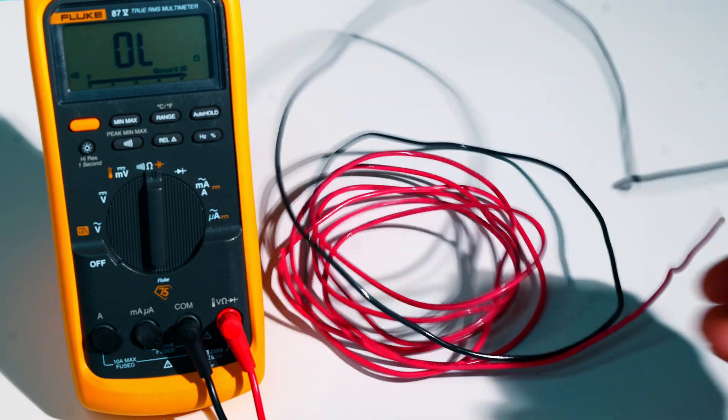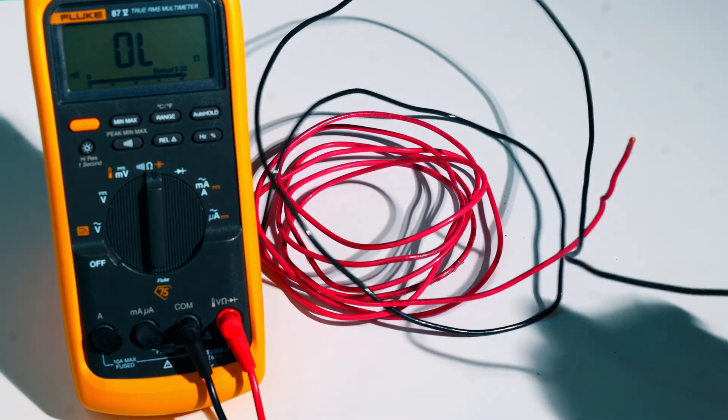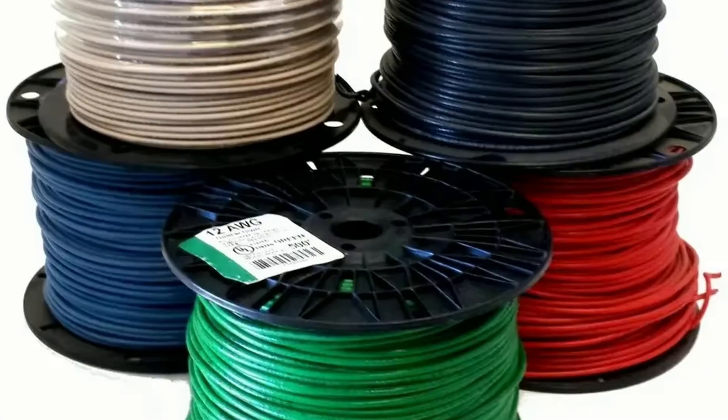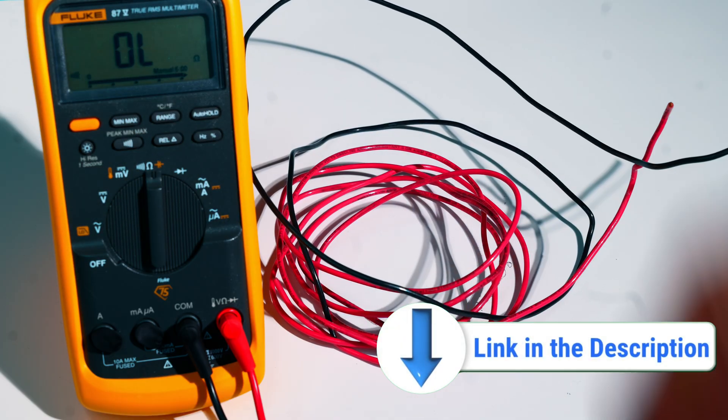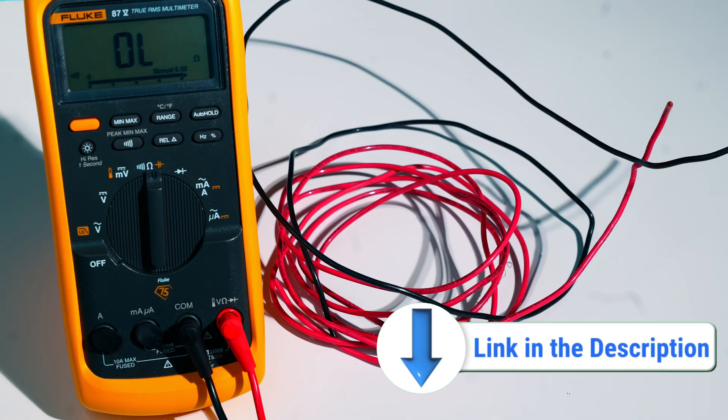Now these are pretty standard. Again, with your black hot, red hot, white neutral, green ground. There are blues. There are browns. And I'll go ahead and throw in the description some common wire color variations that you might see here in the US.